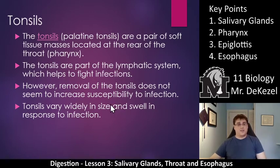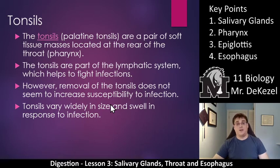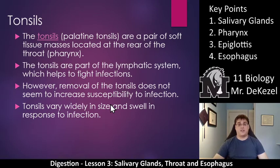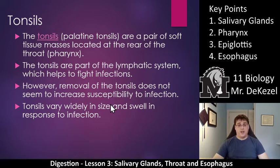Next we'll talk about the tonsils — also called the palatine tonsils, part of the palate that we discussed in the last lesson. They are a pair of soft tissue masses located at the rear of the throat or pharynx. The tonsils are part of the lymphatic system, which helps you fight infections. That's why they get inflamed — they are the site that fights infections and get swollen a lot. However, removal of the tonsils does not seem to increase susceptibility to infection.